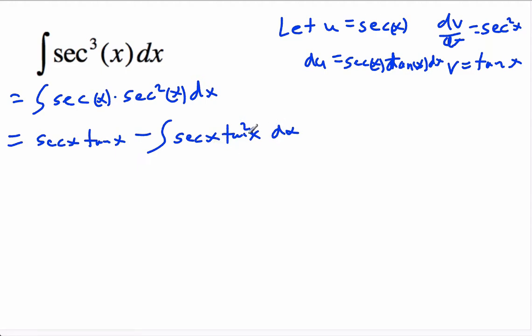Now this integral here, we're going to use the trig identity, which is 1 plus tan squared x equals secant squared x.